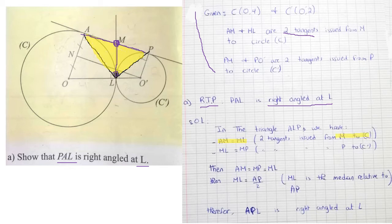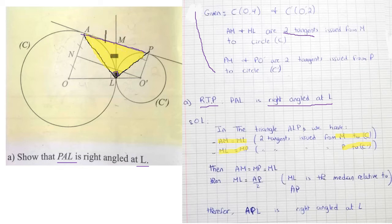On the other circle, from P there are two tangents ML and MP, which are also equal. So ML equals MA, and ML equals MP. Therefore all three are equal to each other. This confirms that L is the midpoint of AP — so LM is the median. And since LM equals AP over 2, we have proven by the median relative to hypotenuse theorem that triangle APL is right-angled at L.